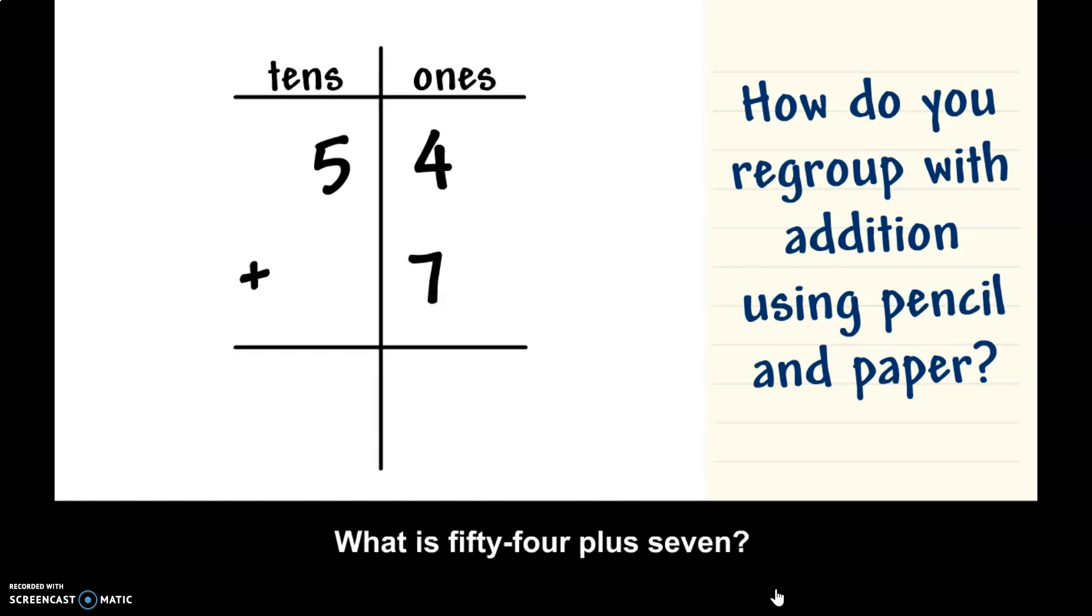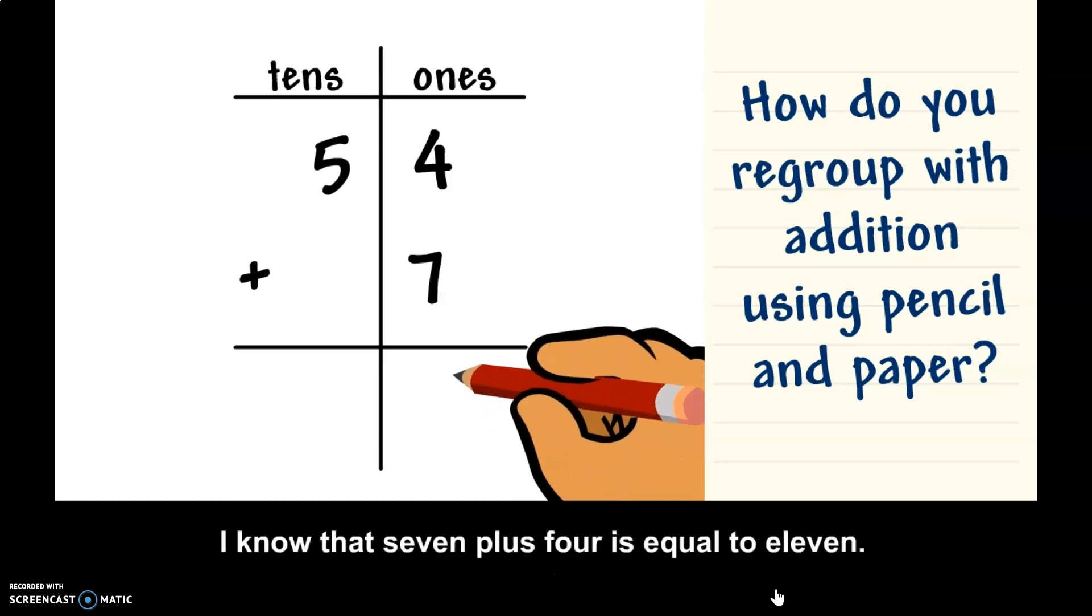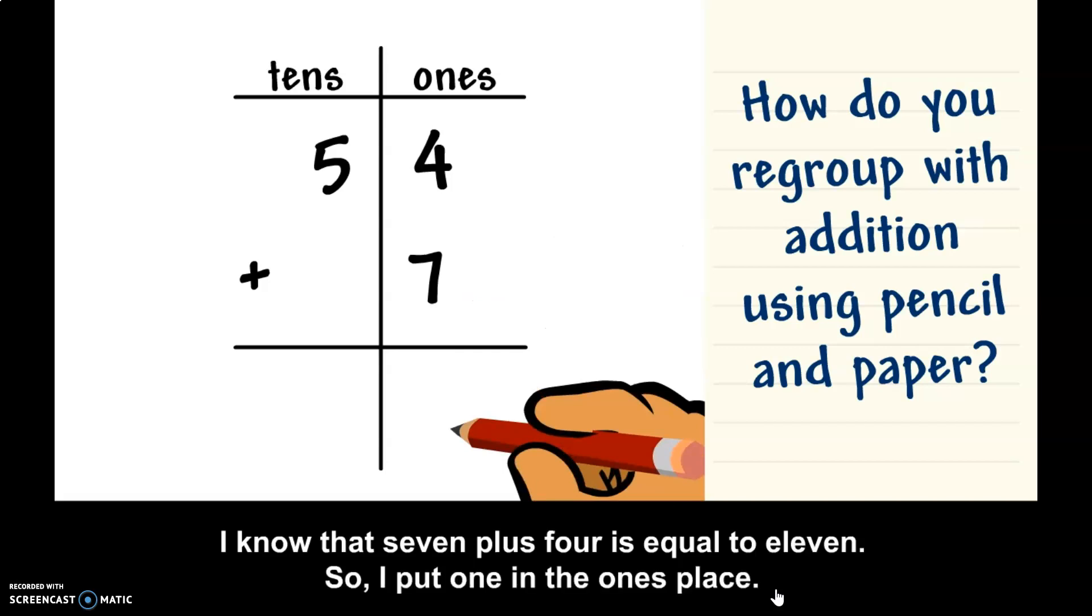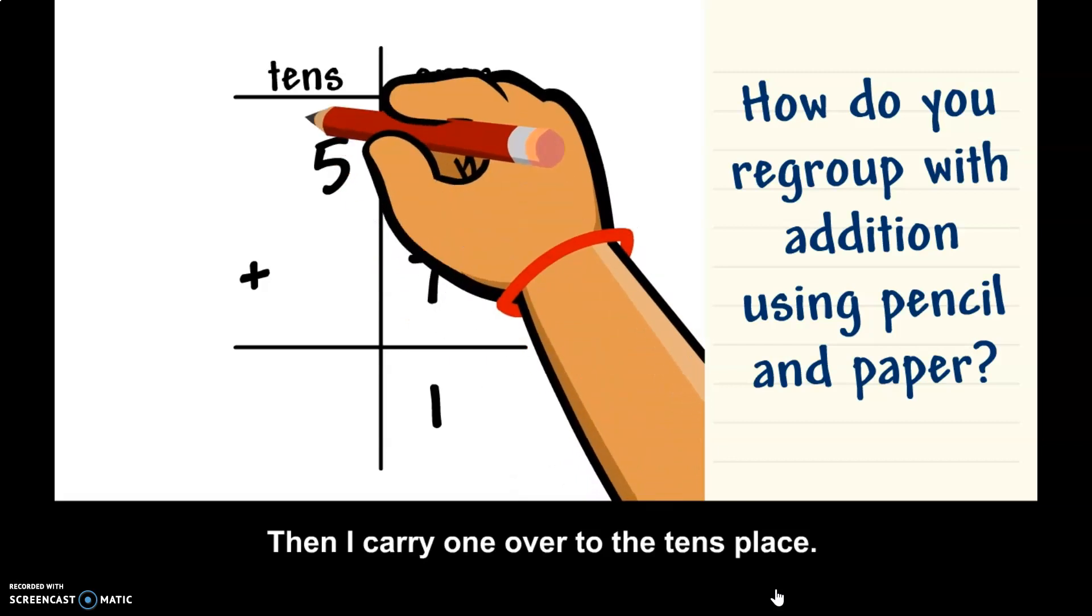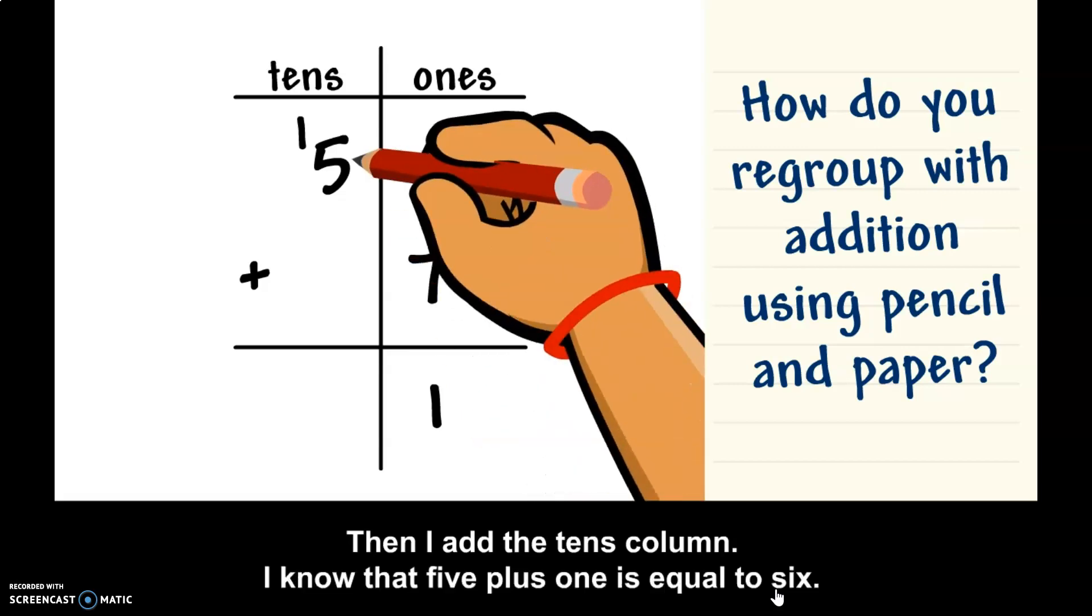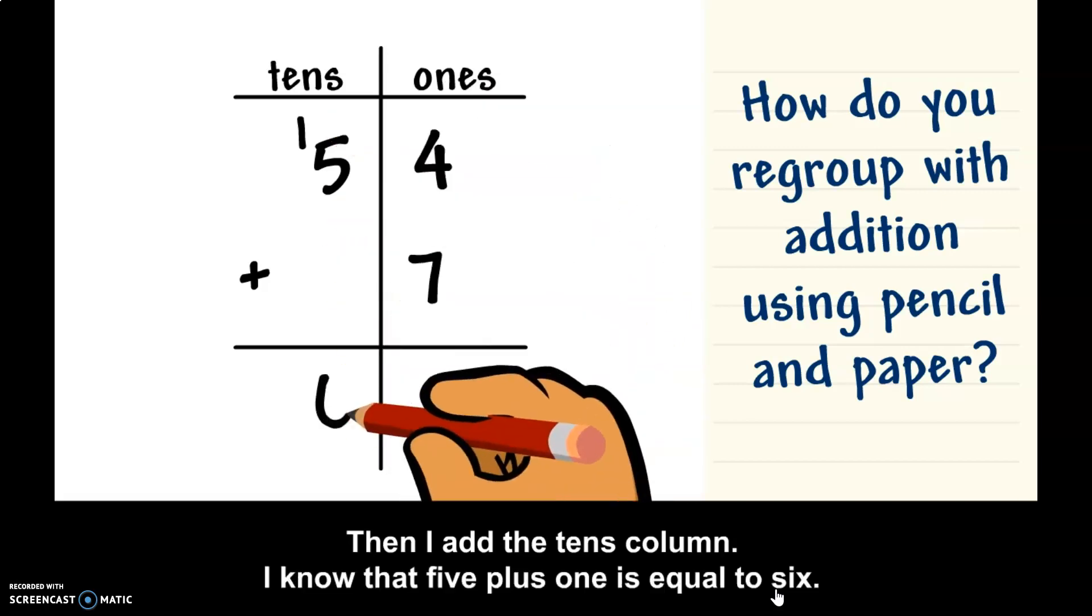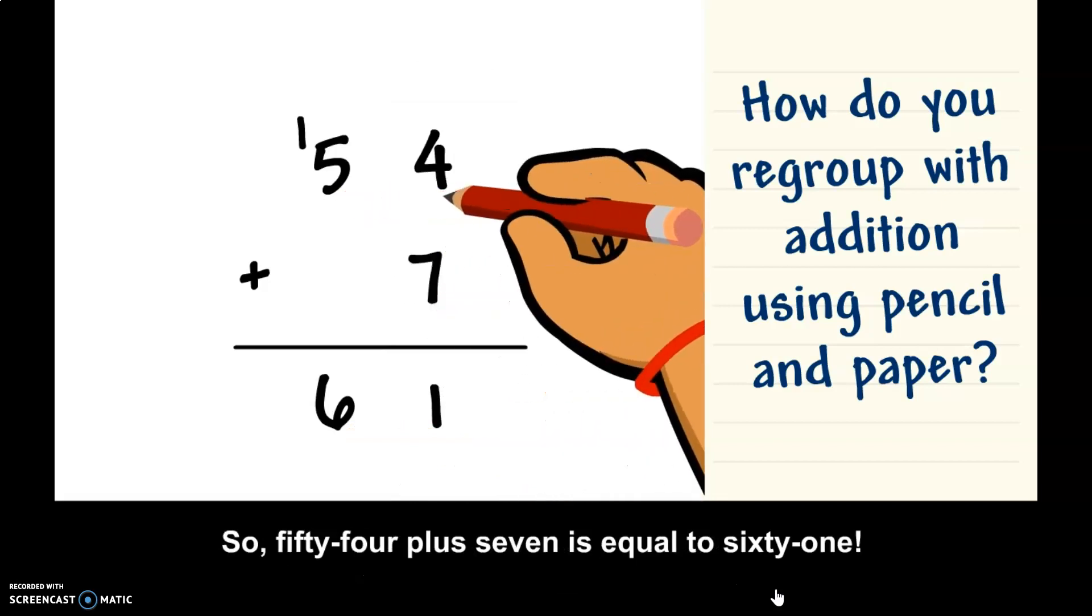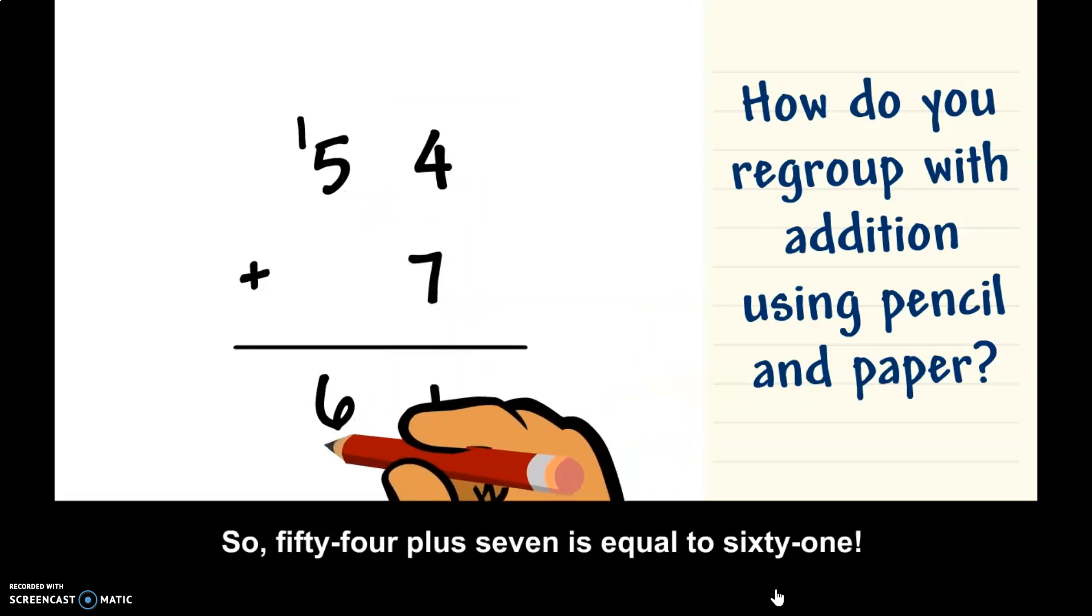What is 54 plus 7? Add the ones column first. I know that 7 plus 4 is equal to 11. So, I put 1 in the ones place. Then I carry 1 over to the tens place. Then I add the tens column. I know that 5 plus 1 is equal to 6. So, 54 plus 7 is equal to 61.